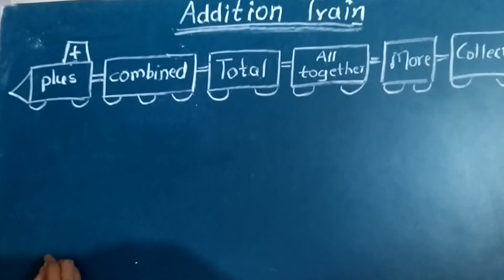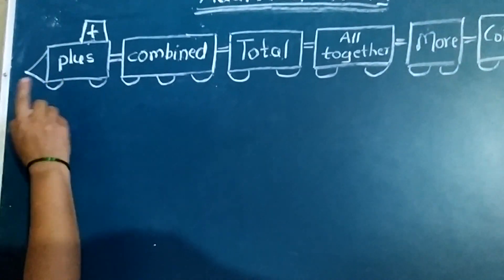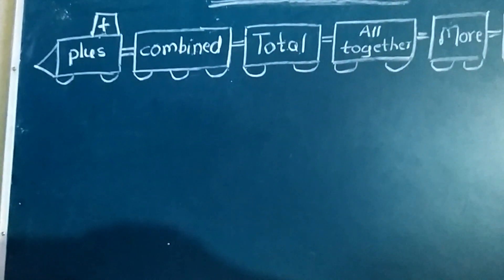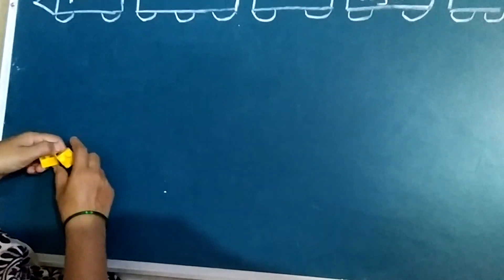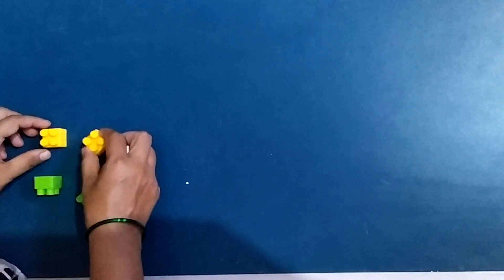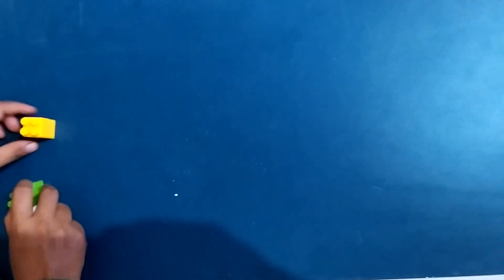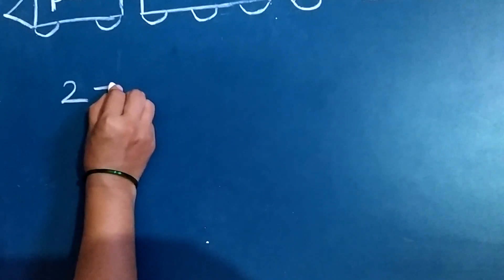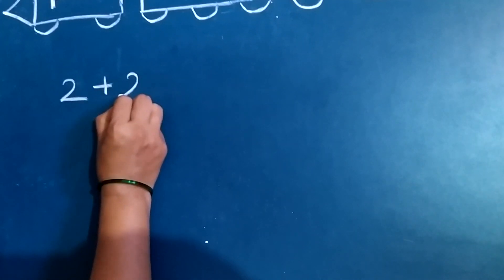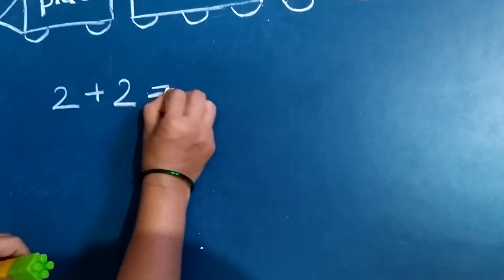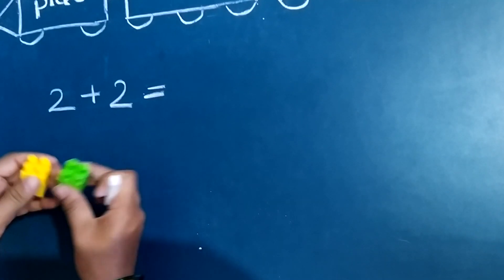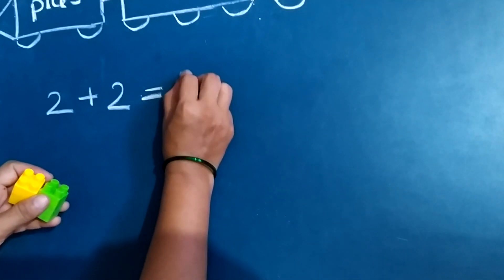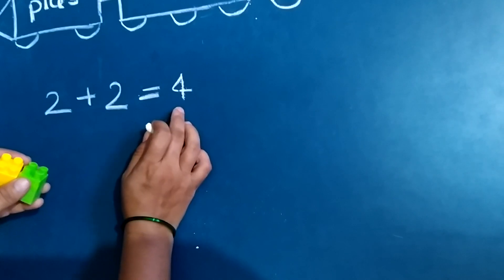Look at this addition train. The plus sign is used in addition. I have two yellow blocks. Swara, give me two more green blocks. Two yellow blocks combine with two green blocks. I get four blocks.